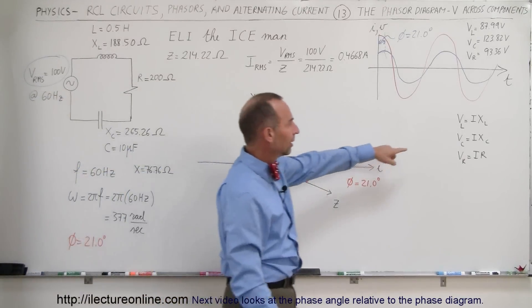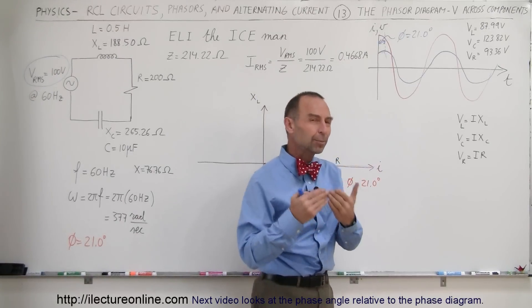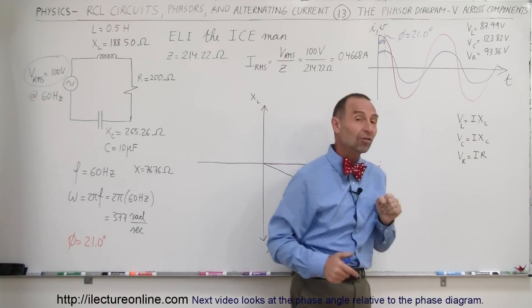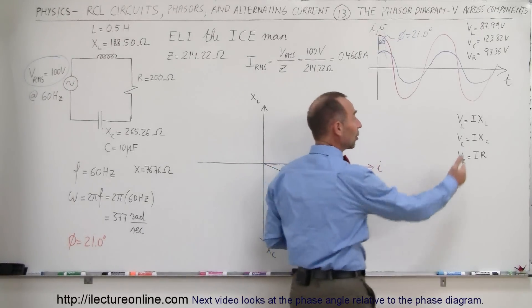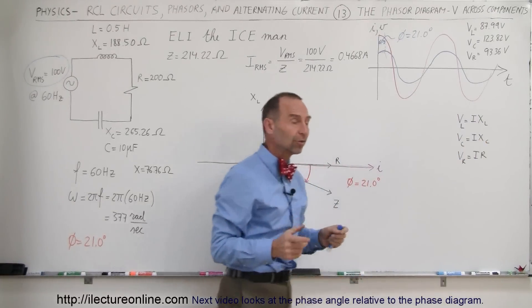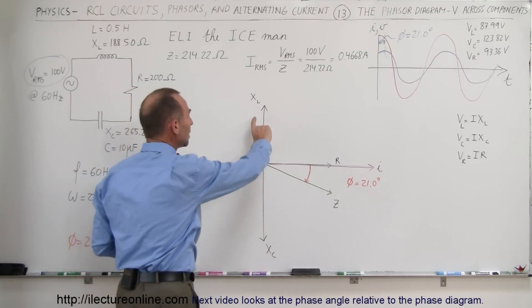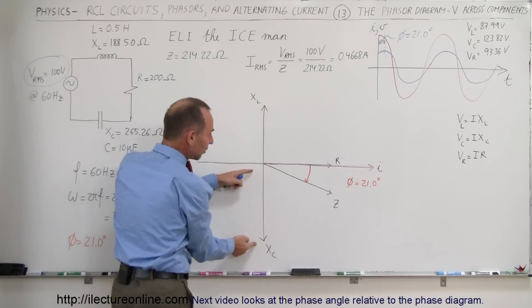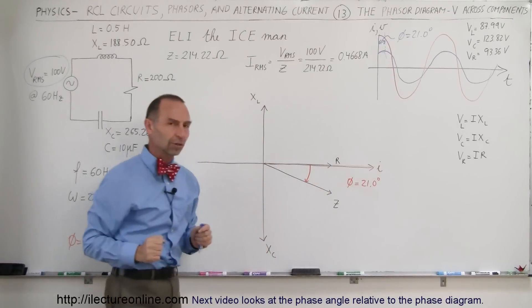Notice the equation here — the voltage across each of the three components is directly proportional to the reactance and the resistance of the three components, because it's a multiplication of the RMS current times either the reactance or the resistance. Here we have a diagram that shows the inductive reactance, the capacitor reactance, the resistance, and then the total impedance of the circuit.